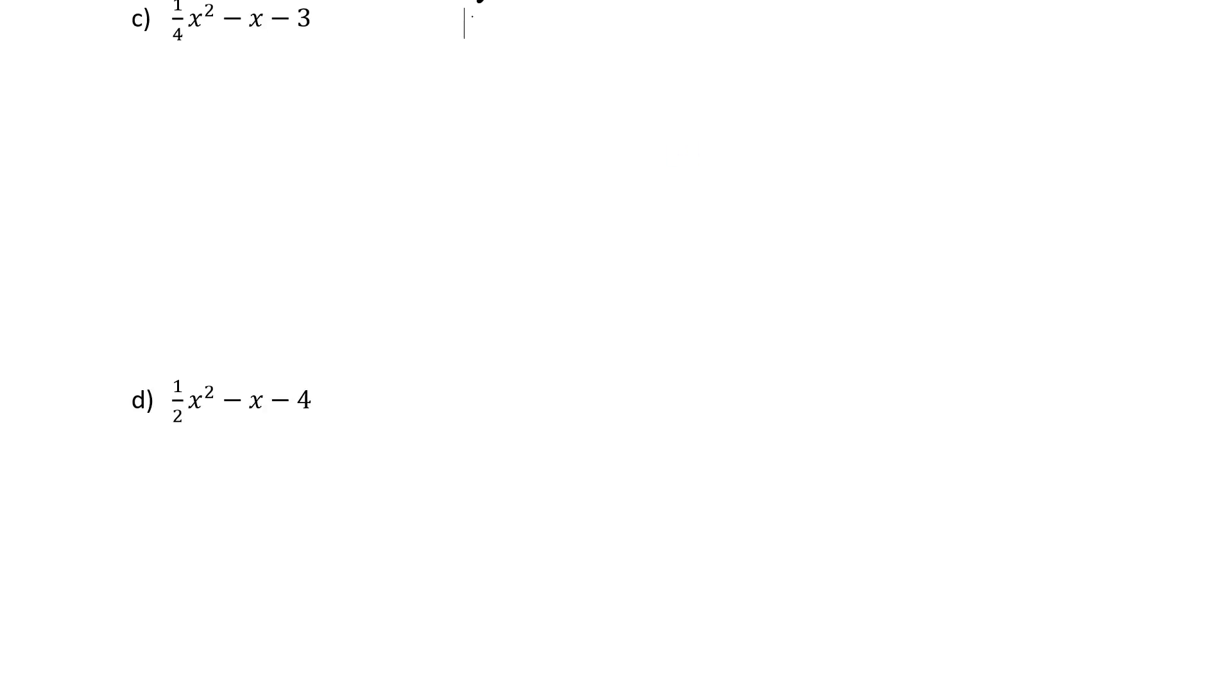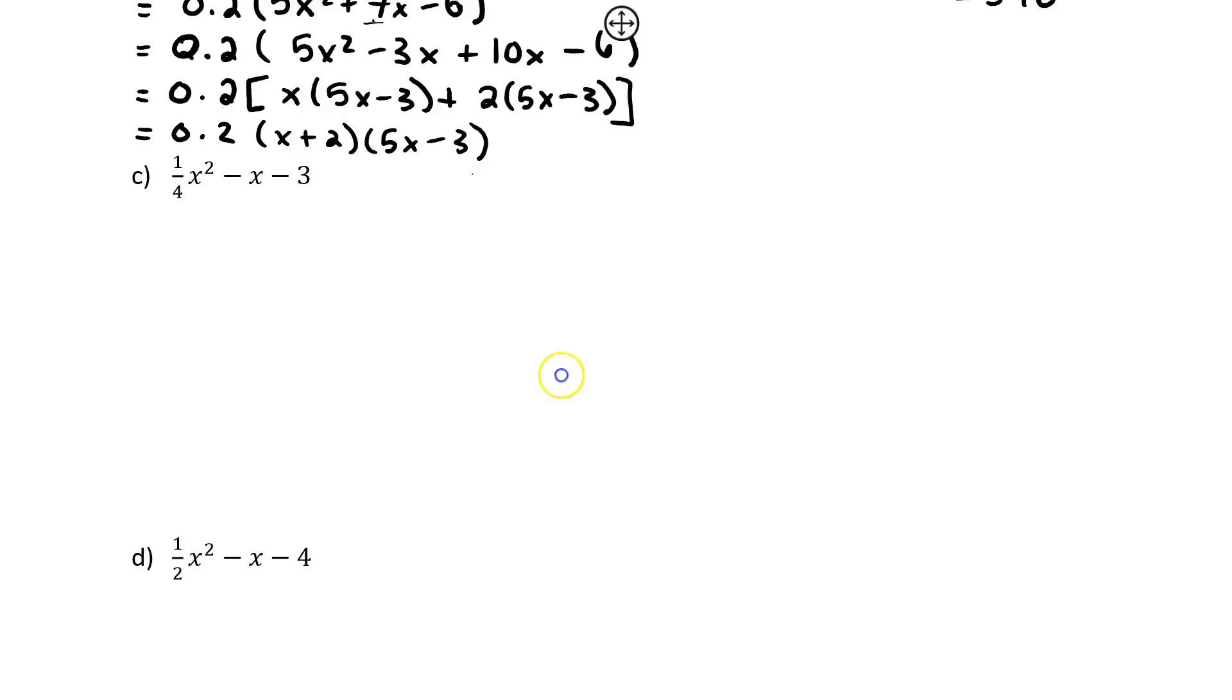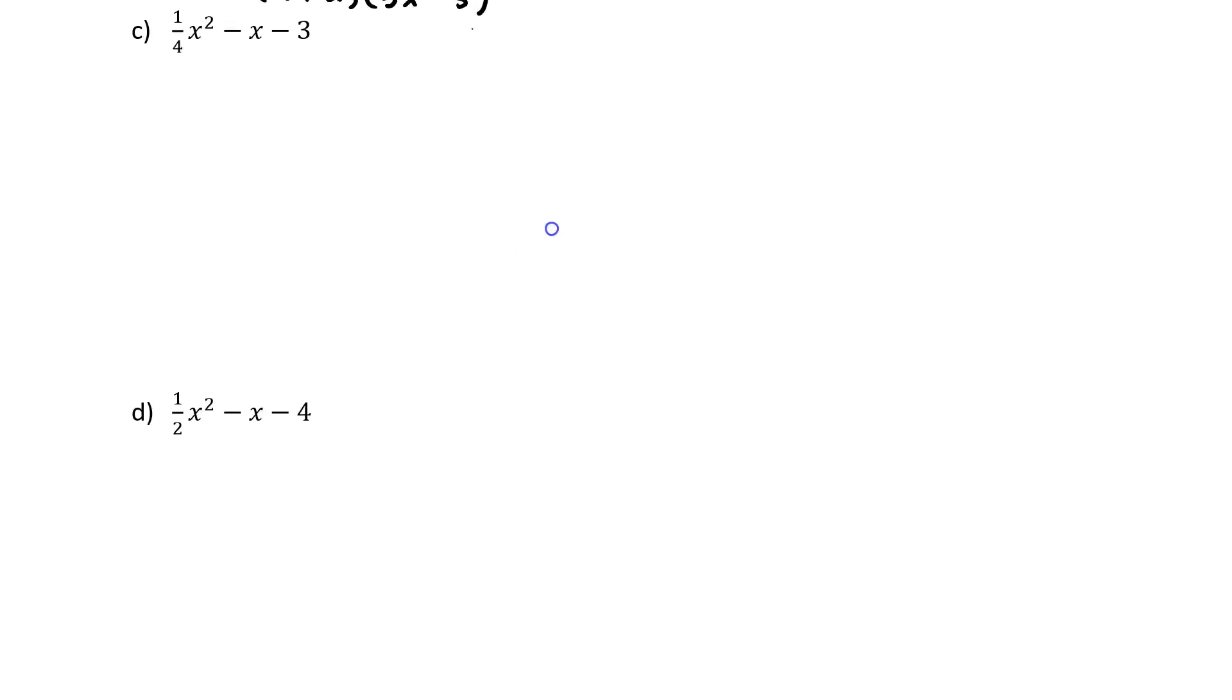All right, so what about these next two? They have fractions. Yuck slash yay, we love fractions in pre-calculus. So just like in this question we factored out a decimal, what we're going to factor out here is a fraction. I'm going to factor out a one quarter. When I divide ¼x² divided by ¼, I am going to just get my x². This one's going to be minus x divided by ¼, which is going to be 4x. Another way we can think about it is if I go ¼ times negative 4x I get back to my negative x. This one, negative 3 divided by ¼ is going to be negative 12. Boom.